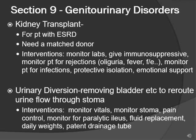Urinary diversion is the process of removing the bladder and surrounding structures to reroute urine flow through a stoma opening. Interventions: monitor vitals, monitor the stoma, put them on pain control. The main complication to monitor for is paralytic ileus. Also have fluid replacements, take daily weights, and maintain patent drainage.